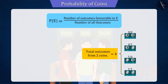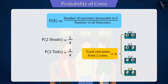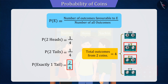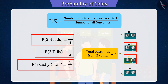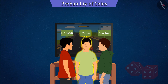Using the formula of probability, we can say that the probability of two heads coming together is 1 by 4, and the probability of two tails coming together is also 1 by 4. While the probability of exactly one tail appearing is 2 by 4, which is the highest among these three. So from the results obtained, we can say that Monu might get to play first.